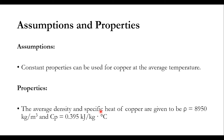First we will discuss the assumptions and properties. We assume that constant properties can be used for the copper at average temperature. These constant properties are: density of 8950 kg per cubic meter, and Cp, which is the specific heat of copper at constant pressure, is 0.395 kilojoule per kg degree centigrade.